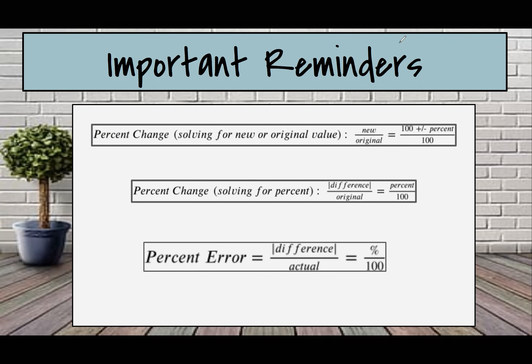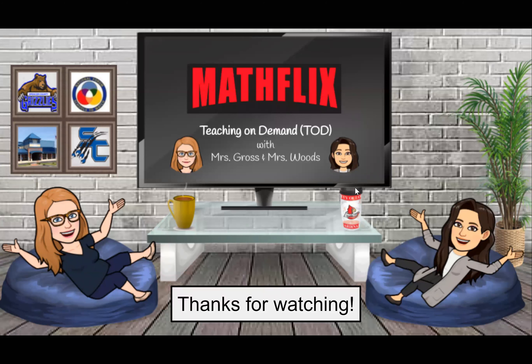So let's go over some important reminders from this lesson. We learned quite a few formulas. For percent change solving for the new or original value: new over original equals 100 plus or minus percent over 100. For percent change solving for the percent: absolute value of the difference over original equals percent over 100. And for percent error: absolute value of the difference over the actual equals percent over 100. Hopefully that helps you guys out and we will see you all on our next episode. Bye!